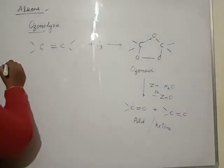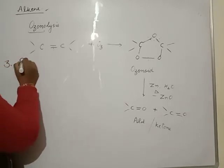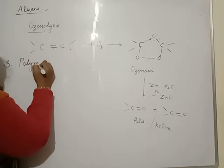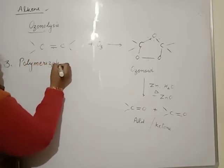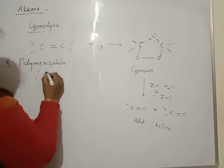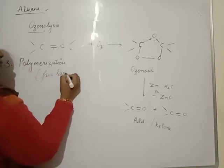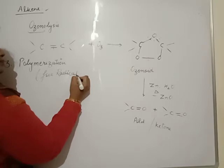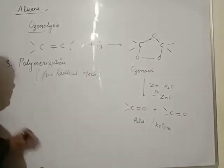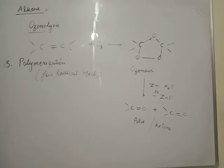And then last property, third one is known as polymerization. Polymerization of alkene follows free radical mechanism generally. It will follow free radical mechanism, but in some conditions it may follow cationic or anionic mechanism also. That means carbocation formed or maybe carboanion, that depends upon condition. Otherwise, it will follow free radical mechanism. That's not matter. Mechanism is not in our syllabus.